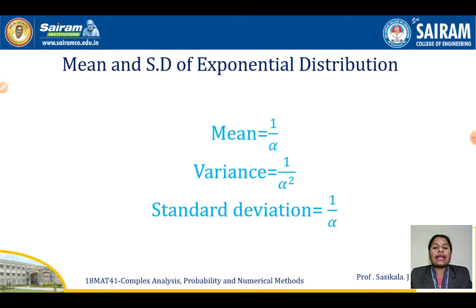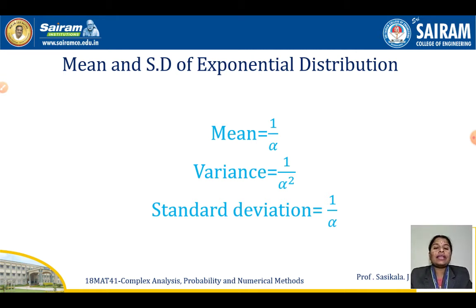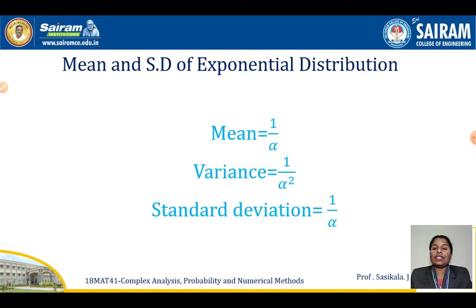The mean and standard deviation of the exponential distribution: the mean is 1 by alpha, the variance is 1 by alpha squared, and the standard deviation is the square root of variance, which is also 1 by alpha. You do not need the derivation, just remember the results for mean, variance, and standard deviation.